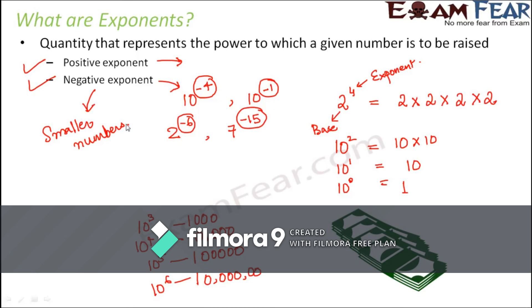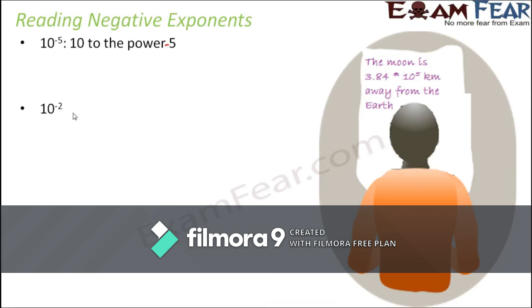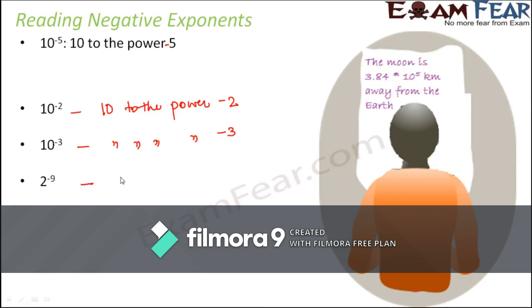We have already learned about positive exponents in Class 7. This time we will focus on negative exponents. How do we read them? If you have 10 to the power minus 5, you read it as '10 to the power minus 5.' Similarly, 10^(−2) is read as '10 to the power minus 2' or '10 raised to the power minus 2.' Other examples: 10^(−3) is '10 to the power minus 3,' 2^(−9) is '2 to the power minus 9,' and (−15)^(−4) is 'minus 15 raised to the power minus 4.'